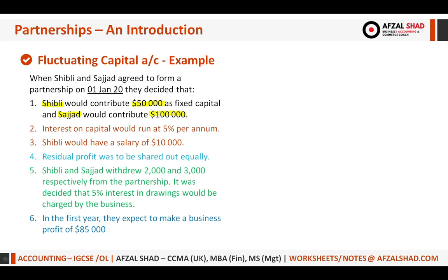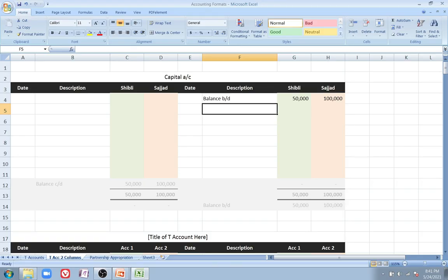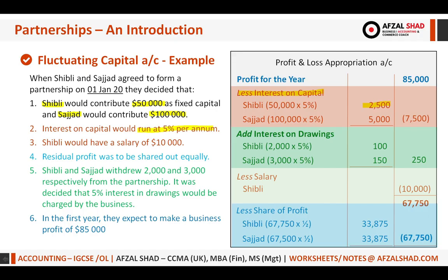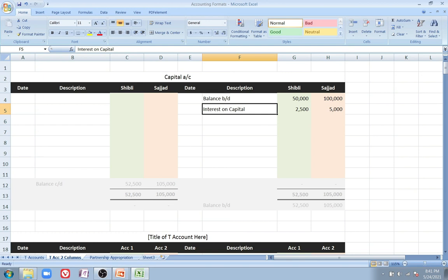Next, interest on capital was to run at 5% per annum. We already calculated these figures in the profit and loss appropriation account, so we pick them up directly. Interest on capital for Shibli was 2,500 and for Sajad was 5,000. Since interest on capital increases the partner's capital, it is placed on the credit side.